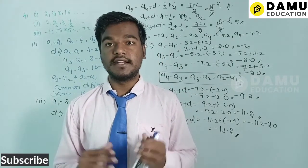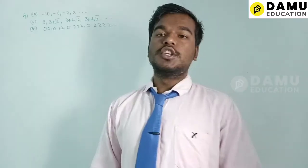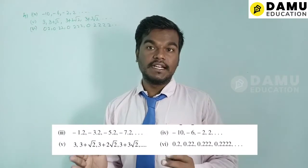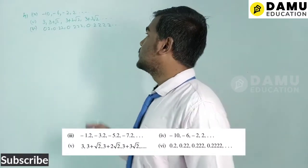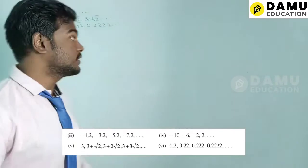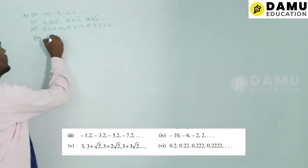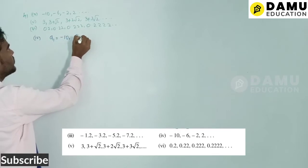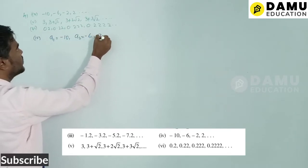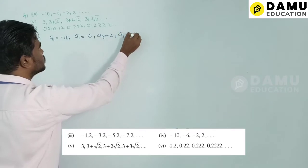Continuing with the fourth series: a1 = −10, a2 = −6, a3 = −2, a4 = 2. These are the given values.